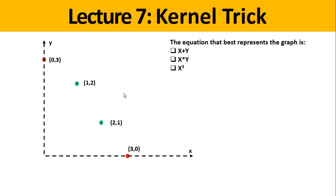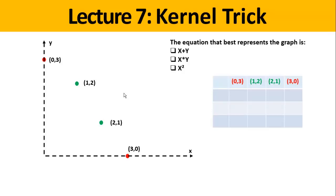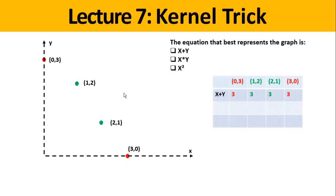The options are: x plus y, the product x times y, or x squared. Let's dive into more details. We can draw a table with the four points on the top row and the result of each function. For x plus y: 0+3=3, 1+2=3, 2+1=3, and 3+0=3 for the red point.